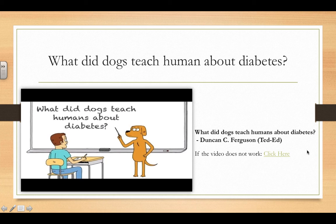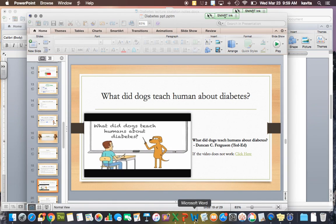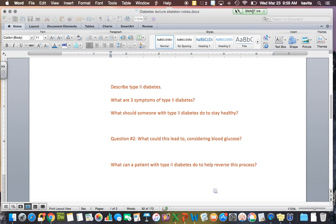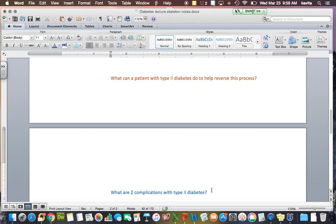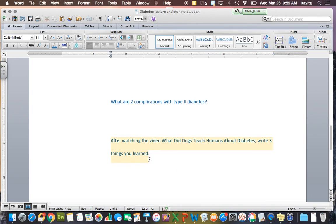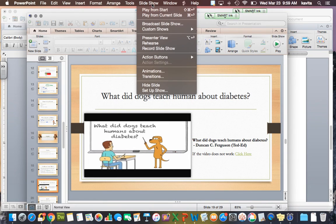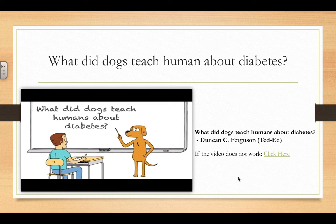There's a TED talk for you here called 'What Did Dogs Teach Humans About Diabetes.' Pause my video, watch the TED talk, then fill in the section asking what three things you learned from it — shown in blue on your notes. After you've finished, come back to the video.